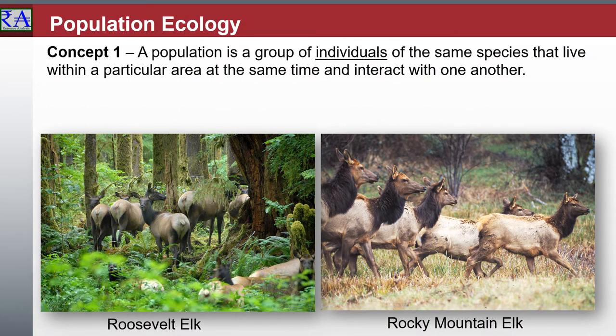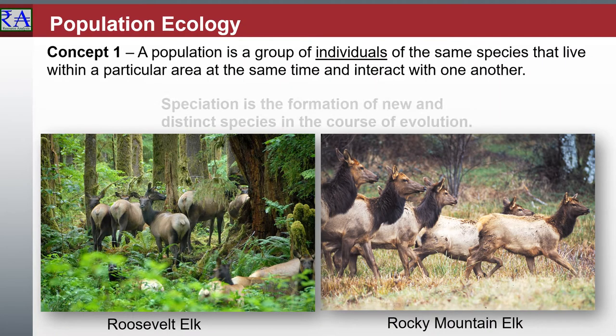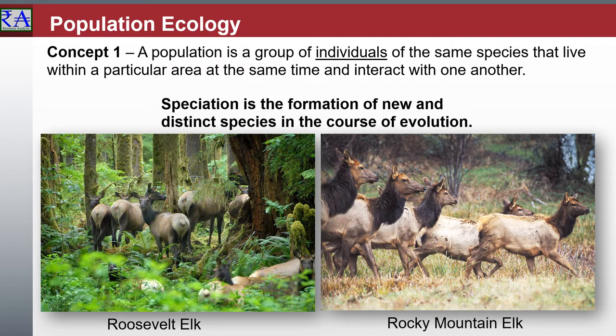Speciation is the evolutionary process by which populations evolve to become distinct species. Charles Darwin was the first to describe the role of natural selection in speciation in his 1859 book, The Origin of the Species. He also identified sexual selection as a likely but problematic mechanism.